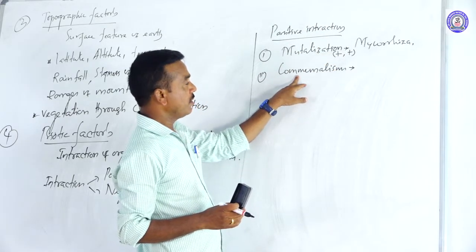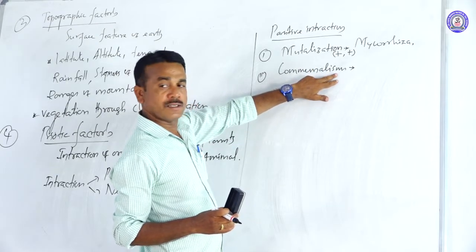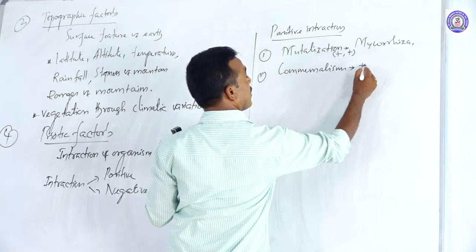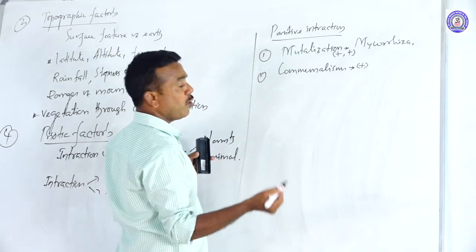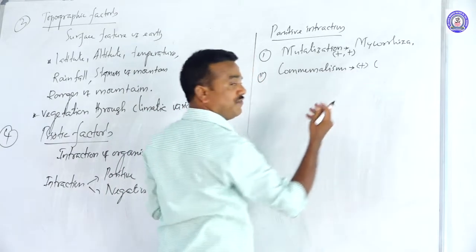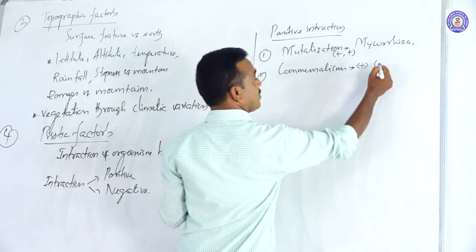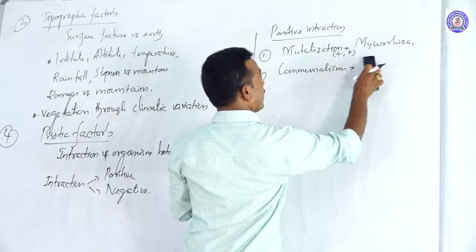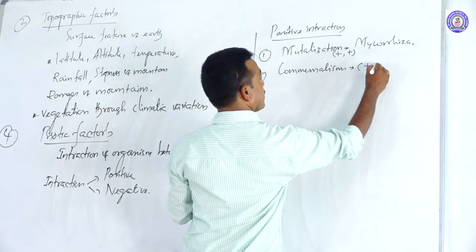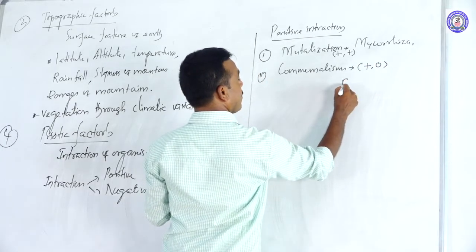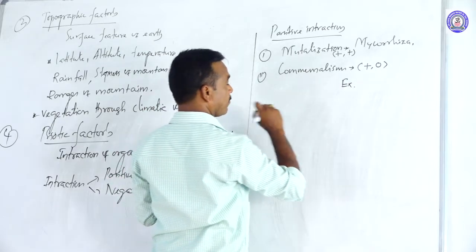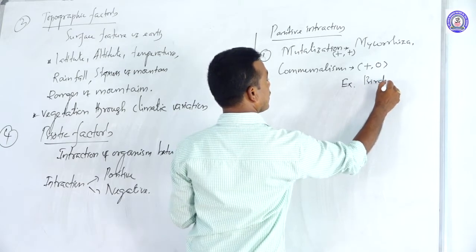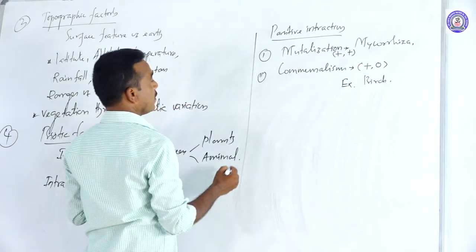Commensalism involves two organisms or two partners where one organism attains benefit and the other partner is not benefited or harmed — the symbol given is plus/zero. The commonly given symbol for commensalism is plus zero. Examples of commensalism include birds.